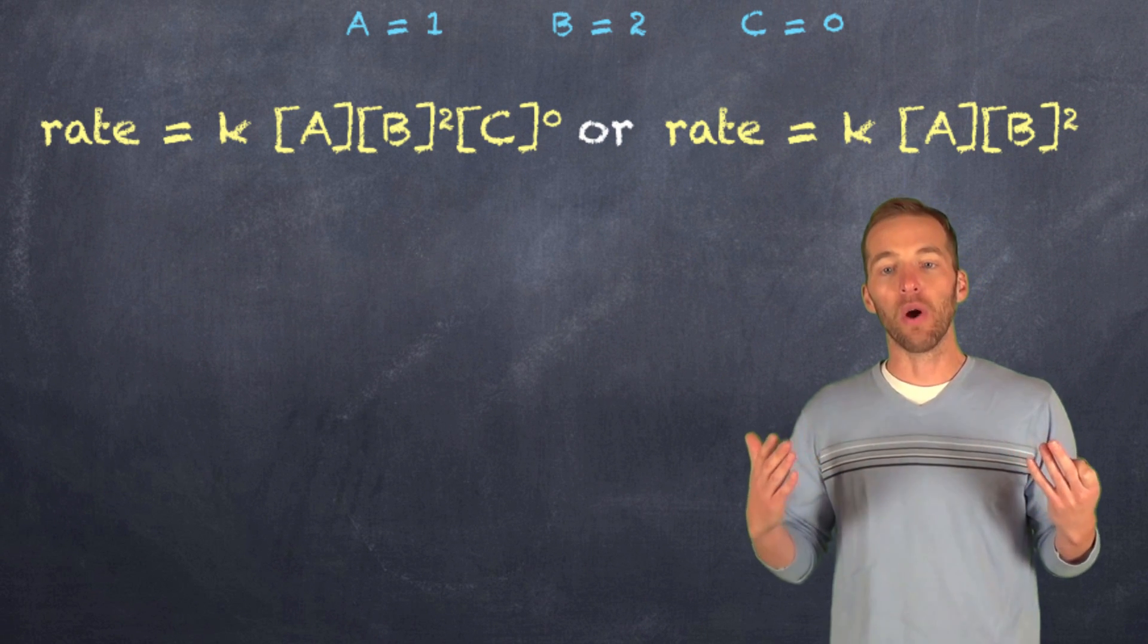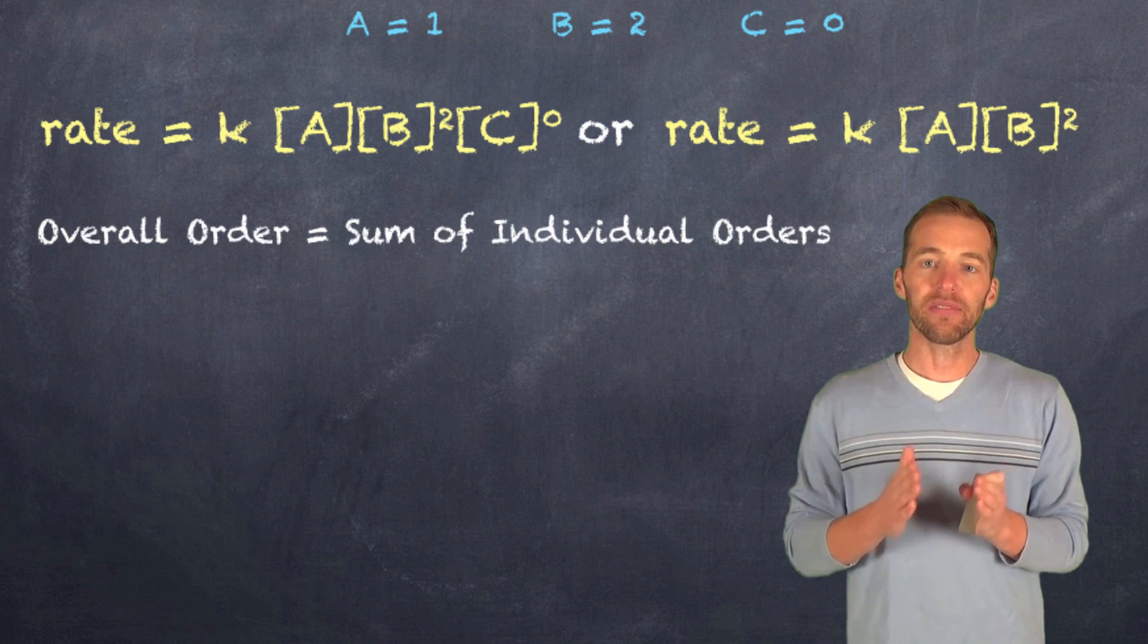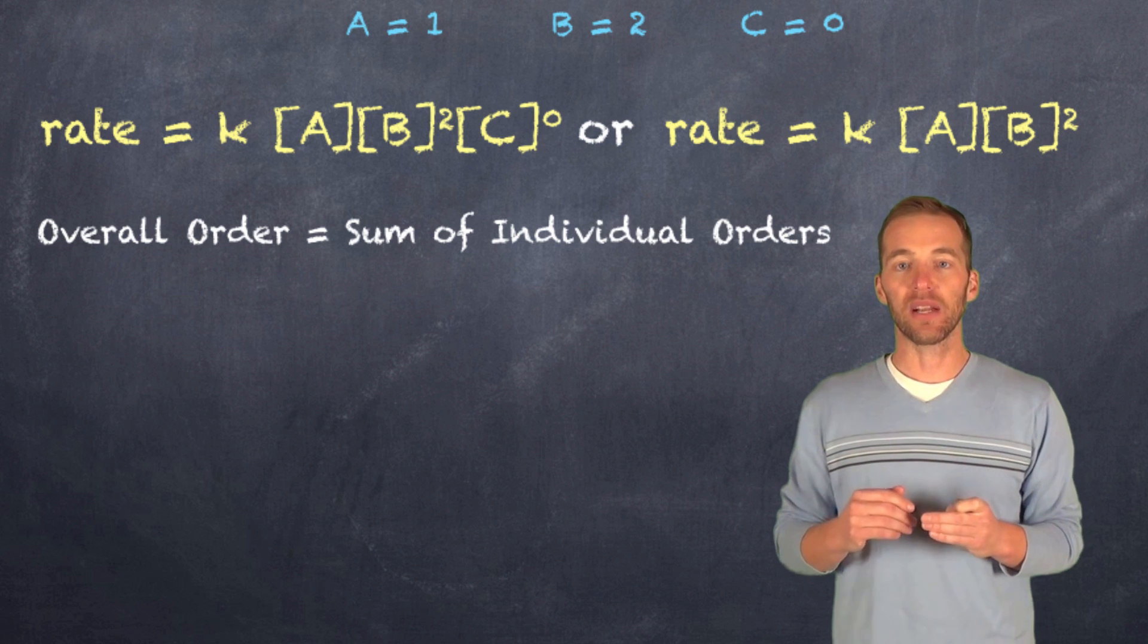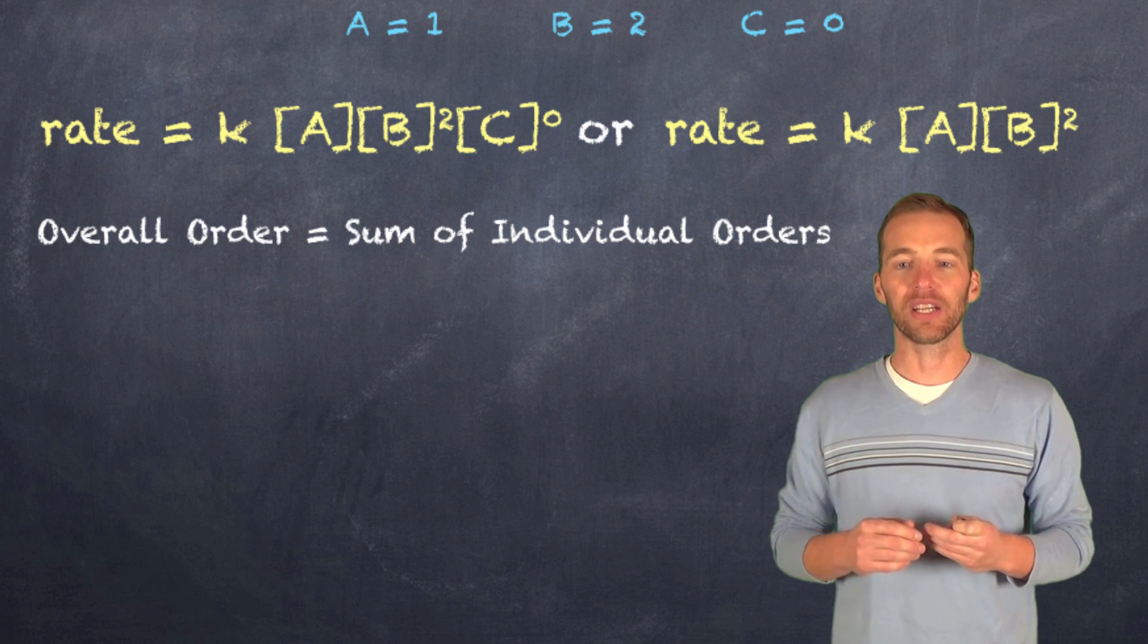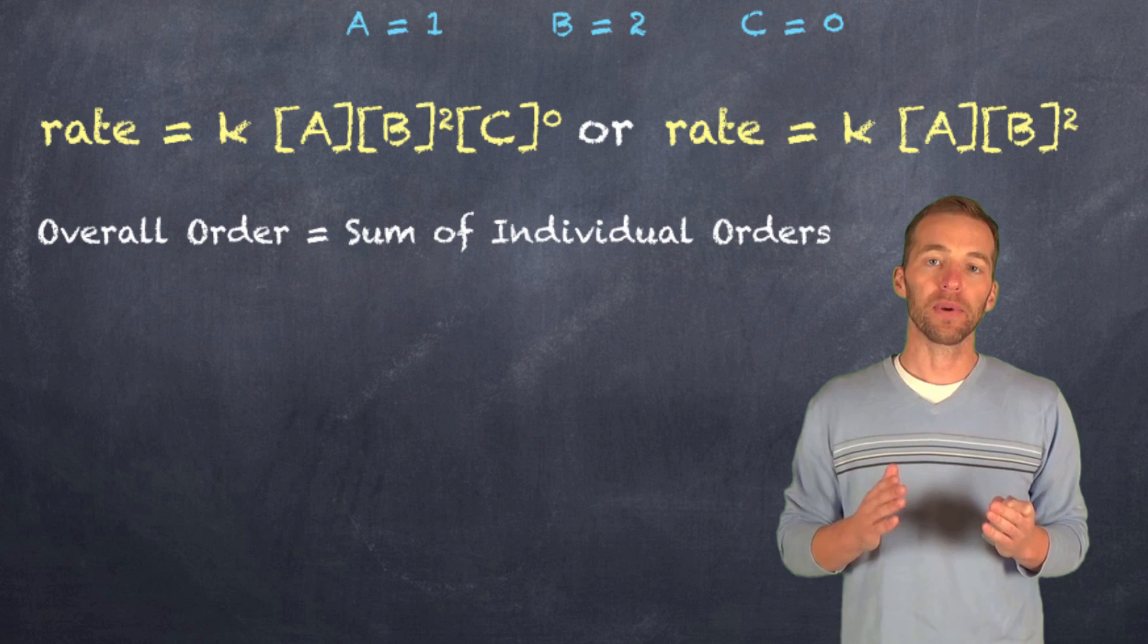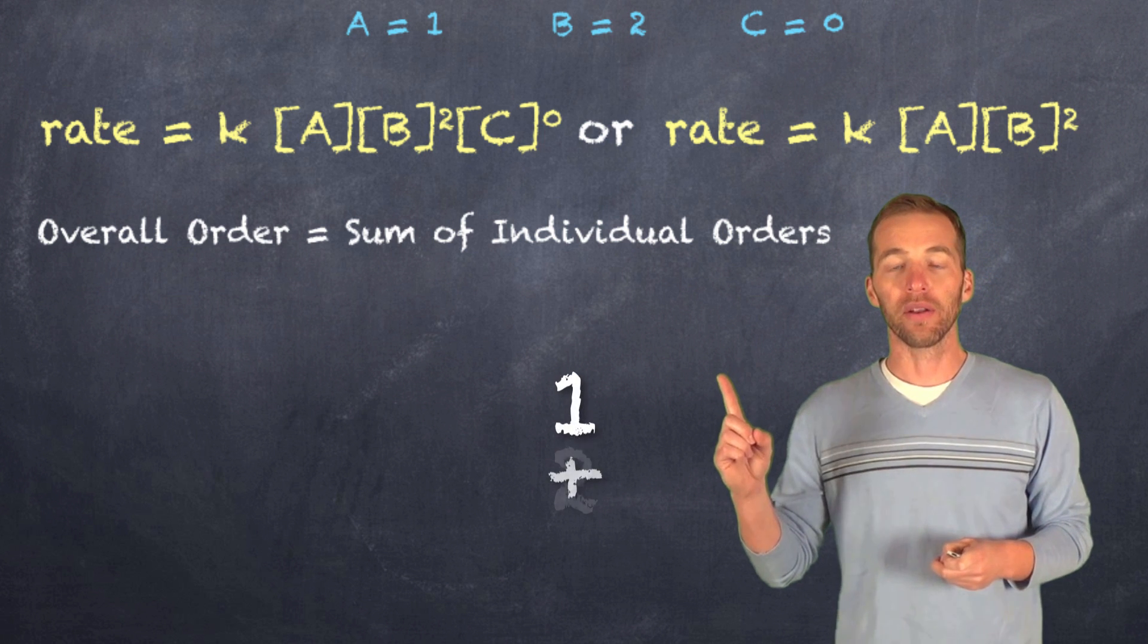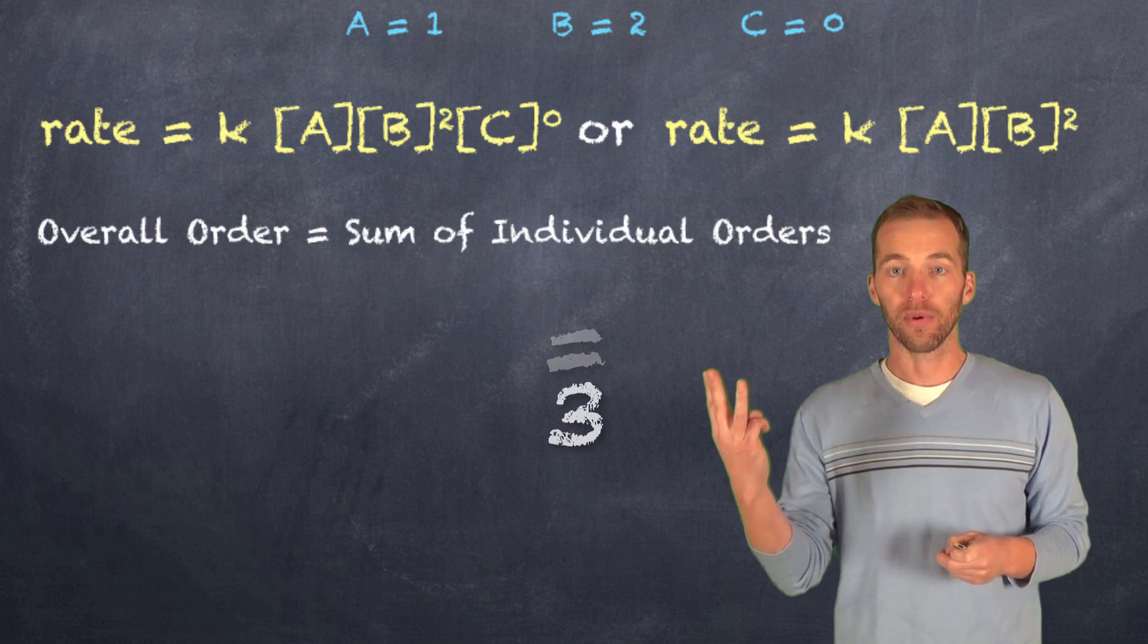Let's take a look at what the overall order of this reaction would be then. Well, if we know that the individual orders are one, two, and zero respectively, the overall order of the reaction is going to be the sum of all of those individual orders. So for our particular reaction, what we have here is an overall order of one plus two equaling three.